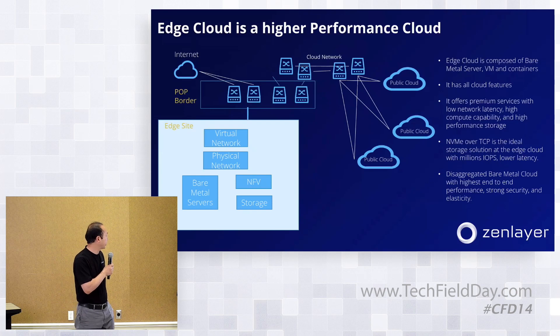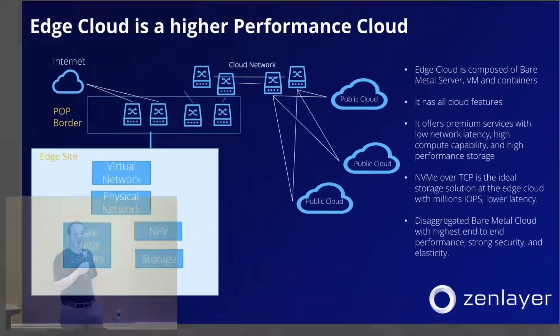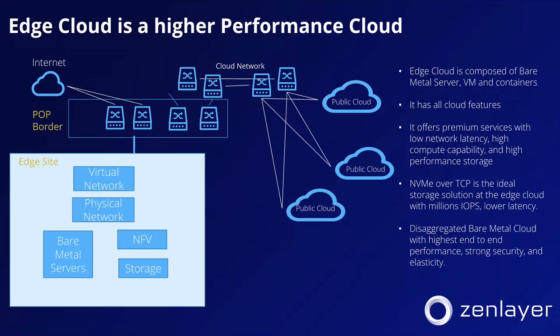The diagram shown here illustrates that at each edge data center, there is a virtual network running as an overlay of physical networks. Within the physical data centers, it has bare metal servers, VMs, storage, and NFV features — combining typical cloud features. It then goes through routers and switches at each point-of-presence site, breaking out to the internet or through a private backbone to do cloud on-ramp. So you can see the edge data center side delivers lower latency to the local region and enables service integration with existing public clouds.